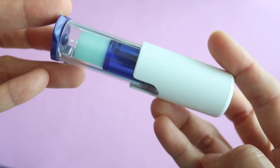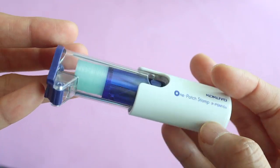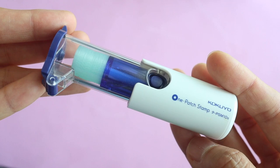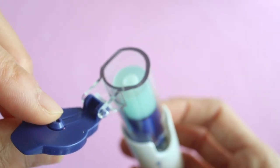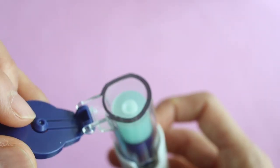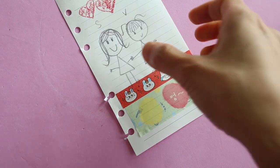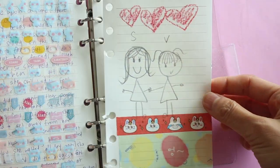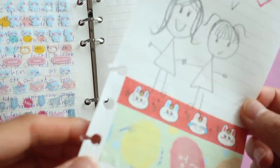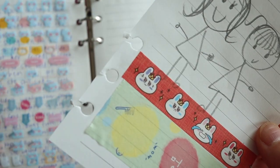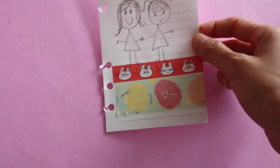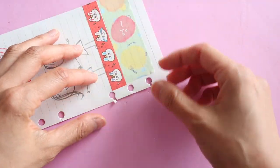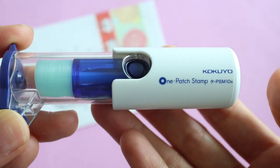Okay, so this is the Kokuyo one patch stamp. And this is basically a reinforcement sticker that you can put on your paper that you have ripped out of your binder or your planner. So this comes in really handy if you use three ring binders for school or if you use a planner that has a binder in it and you have to have holes in your paper. And you accidentally rip the paper out of the binder. It gets so annoying, right? So this thing will repair the holes so perfectly. This is such a genius device.